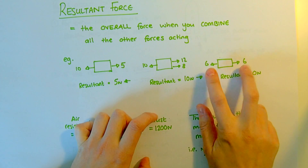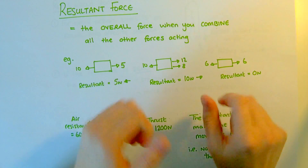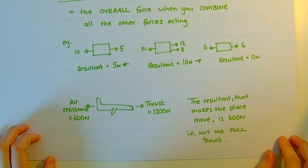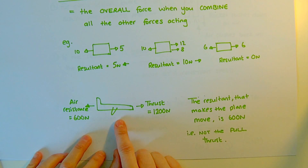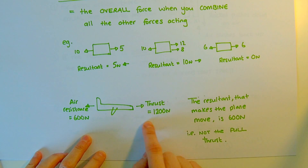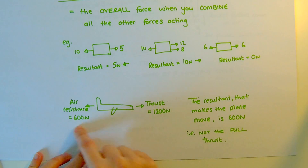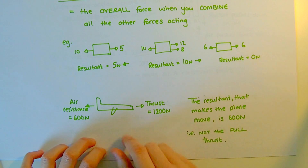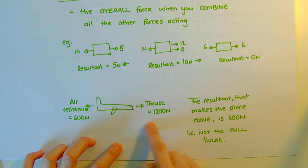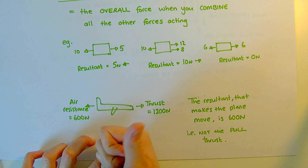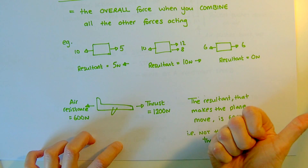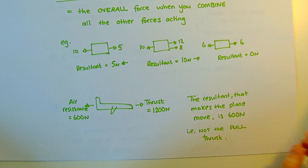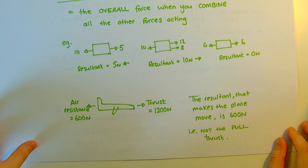If we have balanced forces — the same in opposite directions — our overall resultant is 0. As a little example: if a plane is moving forwards with a thrust of 12,000 and air resistance of 600, the resultant would be 600 in the forward direction. Although we have quite a lot of thrust, not all of it is making it move forward — some is being used to cancel out the air resistance.